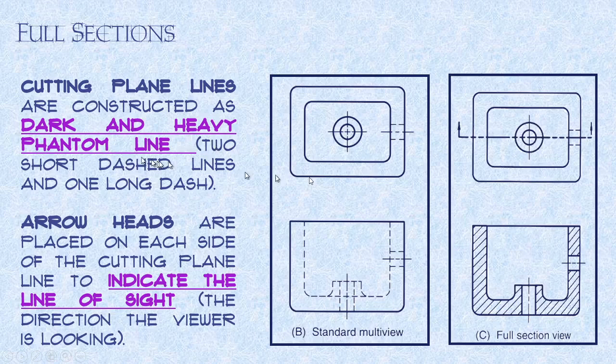Cutting plane lines are constructed as dark and heavy phantom lines. A phantom line, if you remember, is a long dash, two short dashes, long dash, two short dashes, and it's identifying where we're cutting through the shape itself.